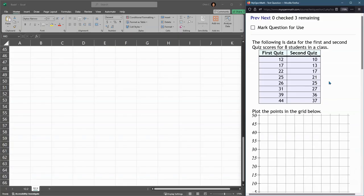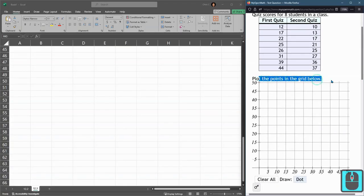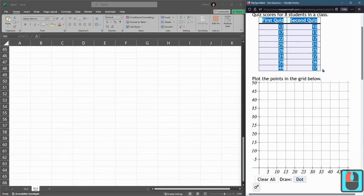In this question there's multiple parts. The first part is plot the points in a grid below. I'm going to skip that part. It takes a little bit of time. Just make sure you plot eight points and if you mess up you have to clear all of them. So if you draw nine points you have to clear them all and start over.